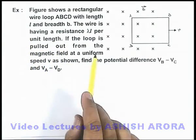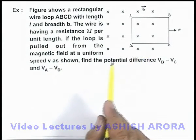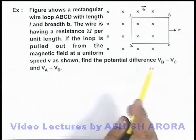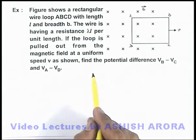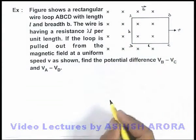The loop is pulled out from the magnetic field at a uniform speed v, as shown in the figure. We are required to find the potential differences V_B minus V_C and V_A minus V_D. The length of the loop is l and breadth is b.